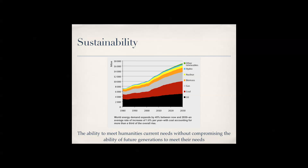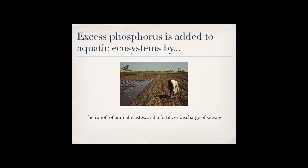Excess phosphorus is added to aquatic ecosystems by the runoff of animal waste, fertilizer, and discharge of sewage.